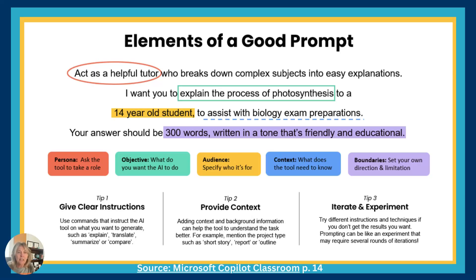Here is an example of a good prompt from Microsoft Copilot. Notice: 'Act as a helpful tutor who breaks down complex topics into easy explanations.' That's the role assigned. 'I want you to explain the process of photosynthesis' — that's the exact objective. 'To a 14-year-old student' — that's the audience identified. Then you tell it what kind of context, tone, and boundaries to work within. This generates much better results.